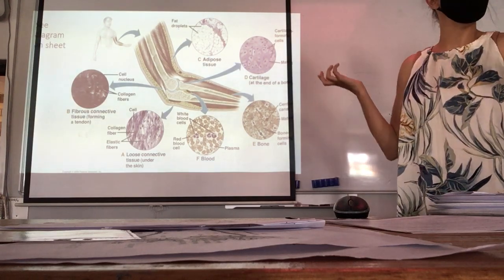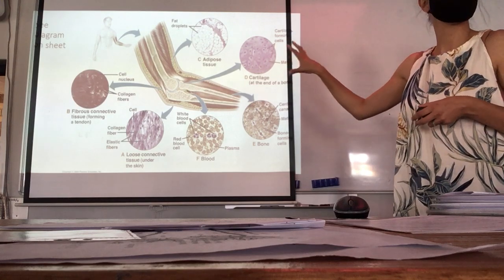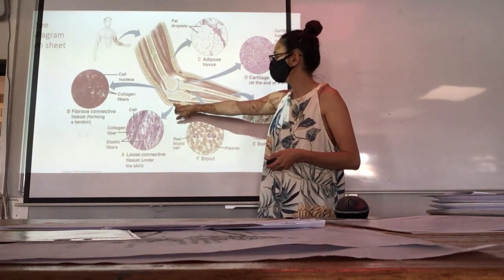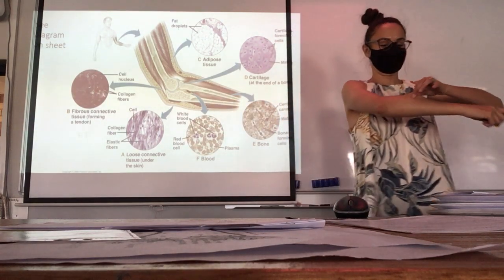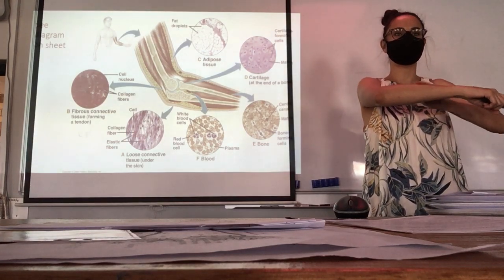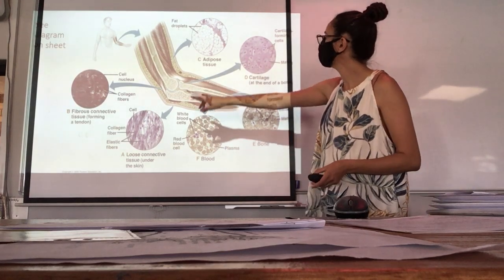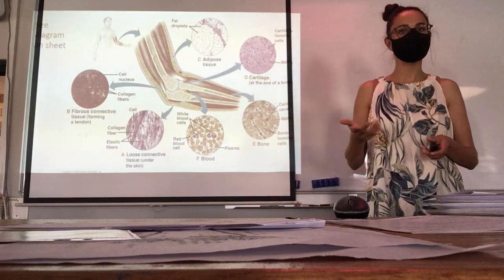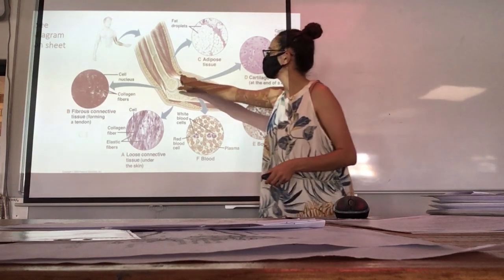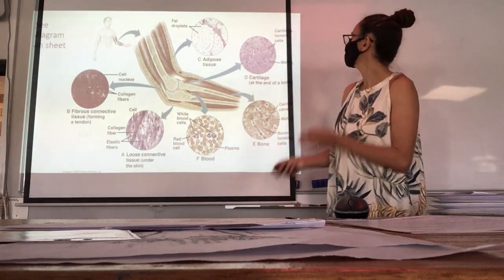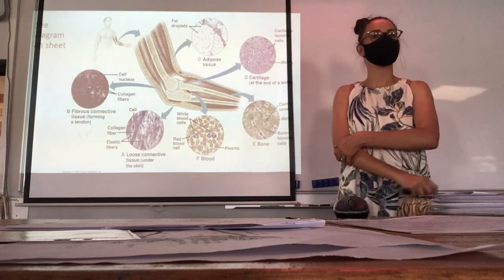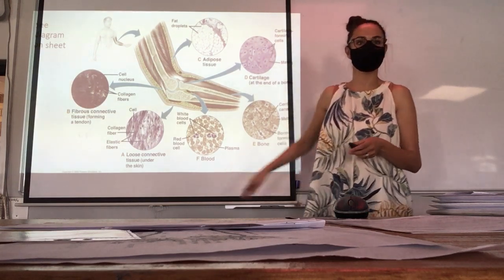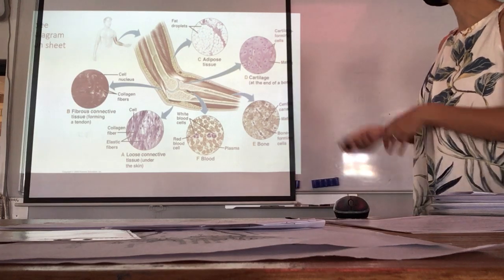Looking at where we find these tissues in the body — using just an arm as an example. Loose connective tissue is under our skin, holding down the epithelial tissue. Fibrous connective tissue forms tendons and ligaments. Adipose tissue is the fat layer under the arm. Cartilage is between joints and at the ends of bones. Bone and blood are also familiar examples — you can see all of these just within one picture.